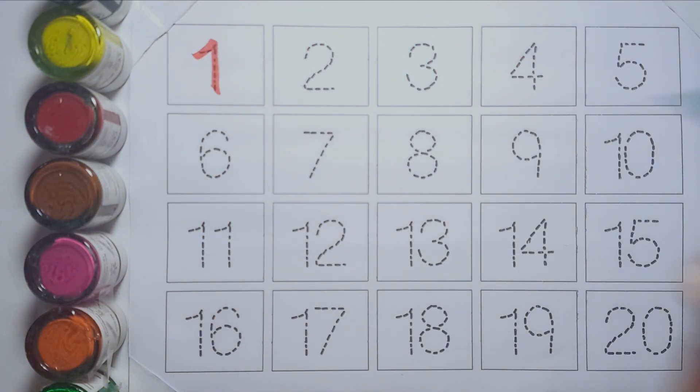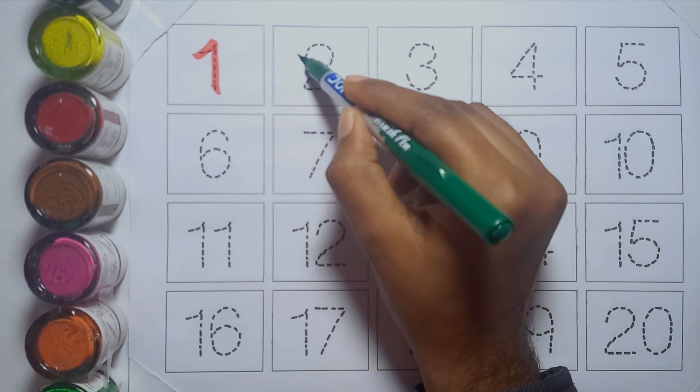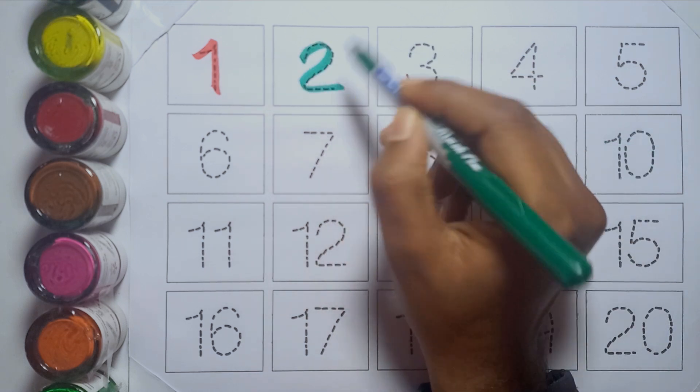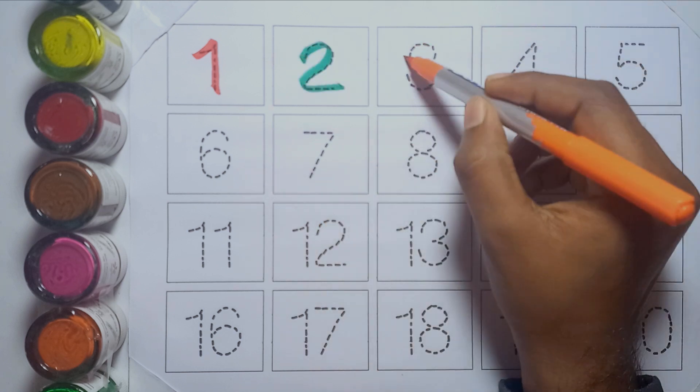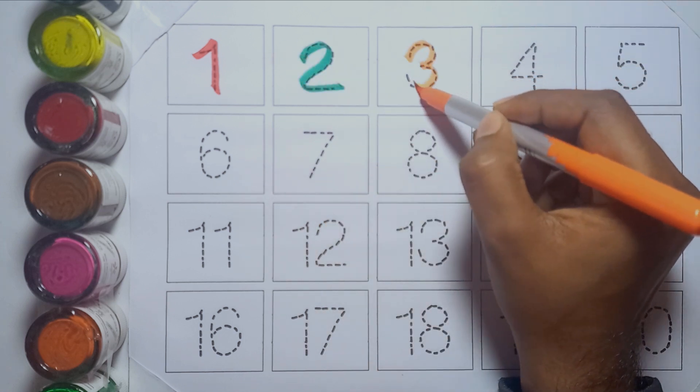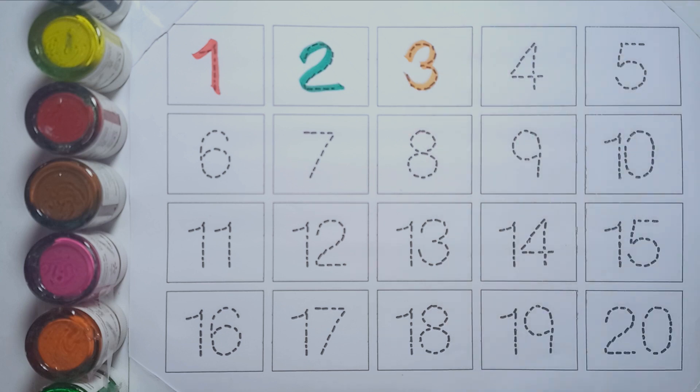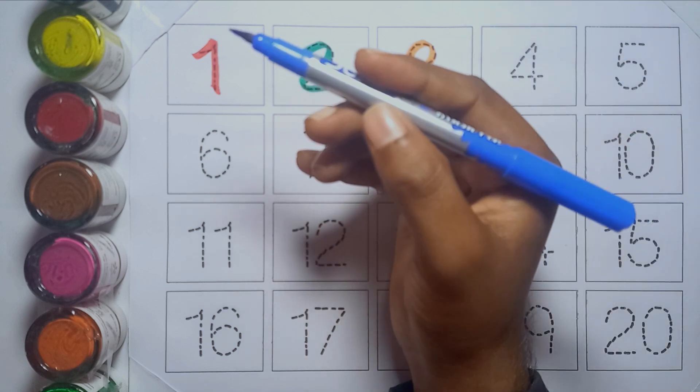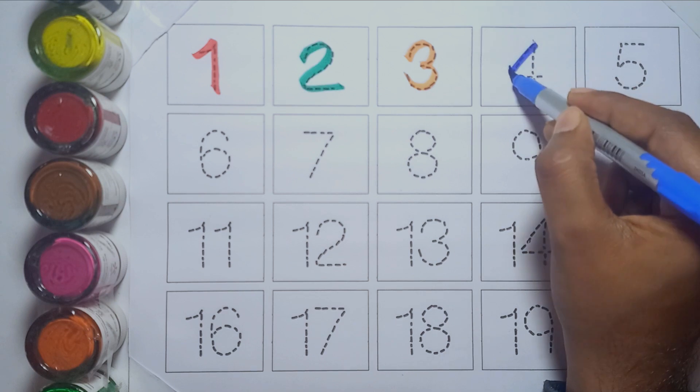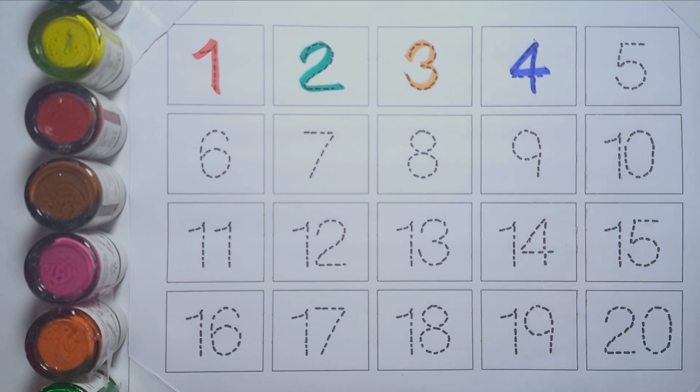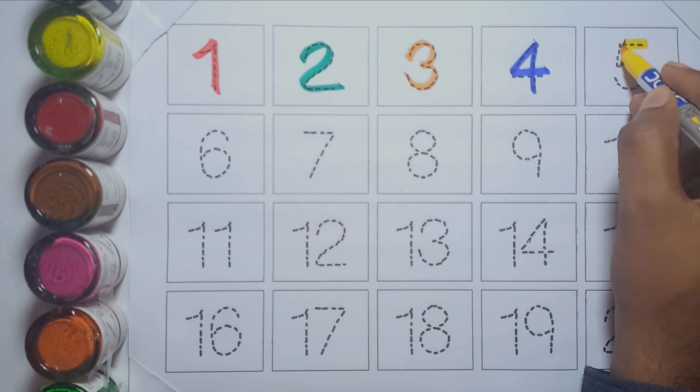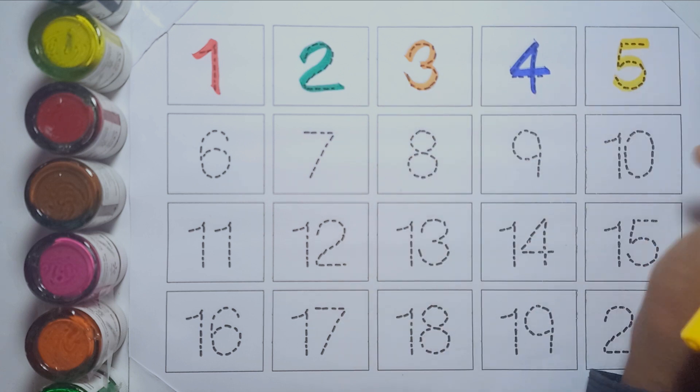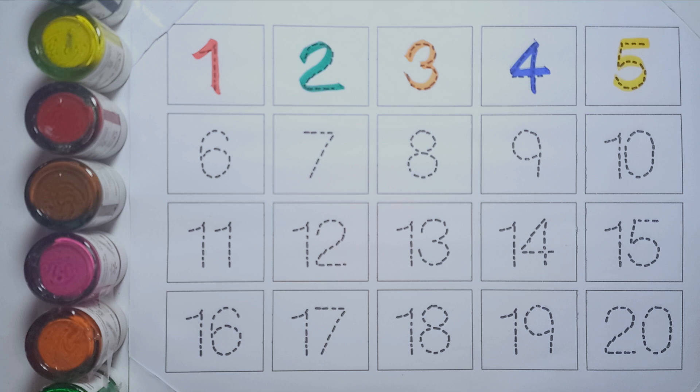One, green color. Two, orange color. Three, blue color. Four, yellow color. Five, black color.